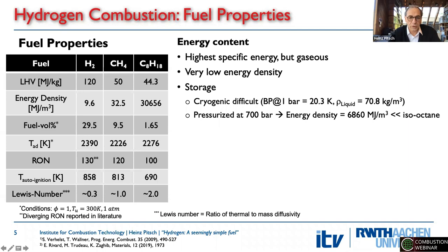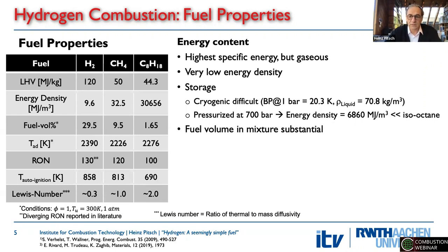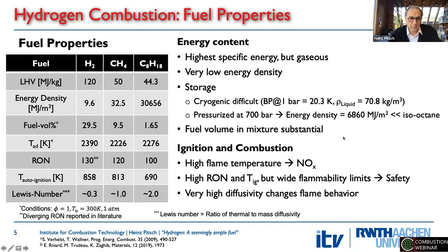High pressure storage is a little better. Pressurized hydrogen would be carried for mobility at about 700 bar, which gives you an energy density of about 7000 megajoules per cubic meter — still only a quarter of other liquid fuels, but at least in the same order of magnitude. Because of this low energy density, the volume of the fuel also makes a big impact on the fuel mixture volume, which can often be neglected for other fuels. Looking at combustion properties, hydrogen has a high adiabatic flame temperature — which might lead to high NOx — a high auto-ignition temperature, which might be good in engines, wide flammability limits raising safety concerns, and a very low Lewis number due to high diffusivity.